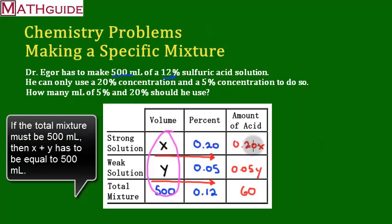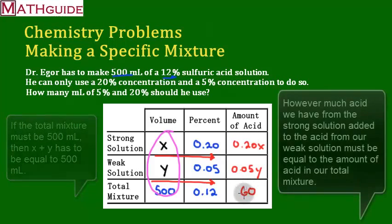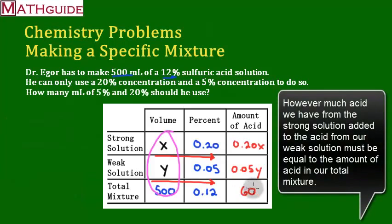So here we're going to use this as one equation. And I also know that the strong solution acid, the weak solution acid, if I add the amount of acids together, it should be equal to the total amount of acid in our total mix. So in other words, here's another equation. So the first column and the second column will be equations that we can use.